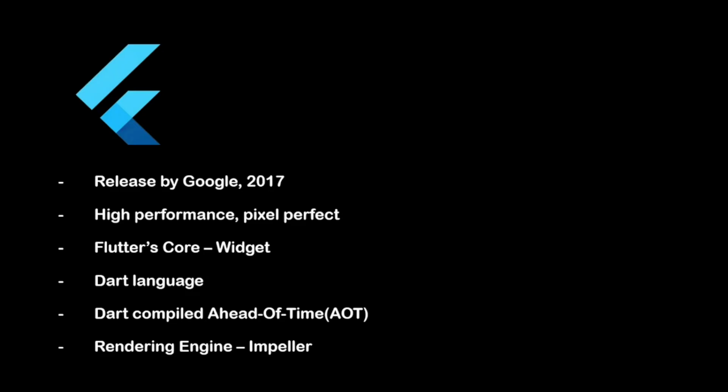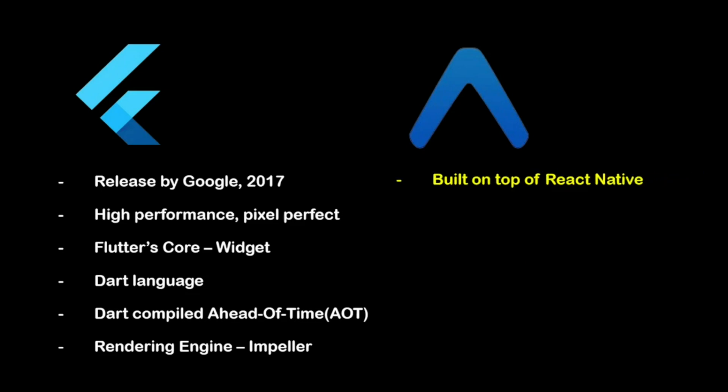On the other hand, Expo is a framework for building universal React applications. It is built on top of React Native, specifically designed to provide a set of tools and services that enhance and simplify it. Expo abstracts a lot of the complexity involved in building with React Native, allowing developers to write JavaScript code that compiles to native components. One of the key features of Expo is Expo Go — a mobile client that lets you open and preview your project on a real device instantly without needing to compile the app first.